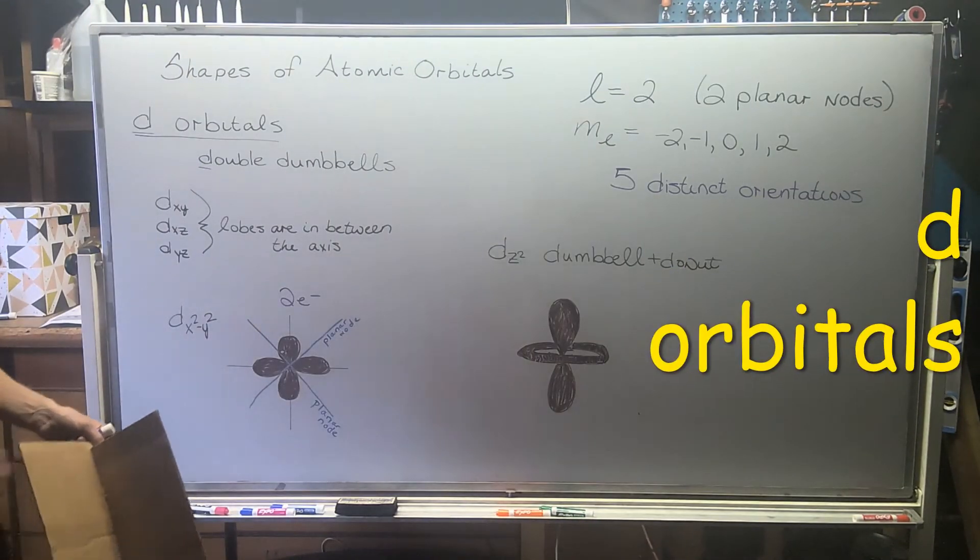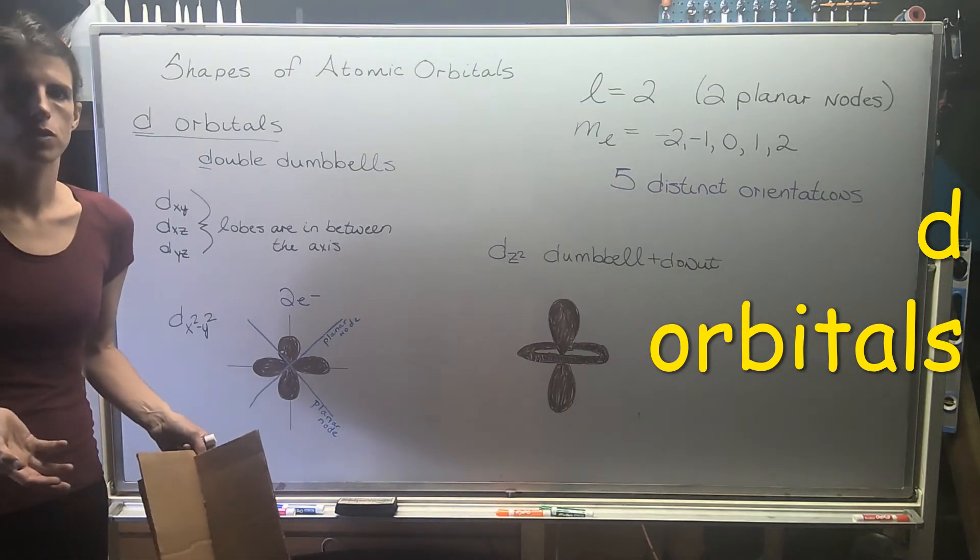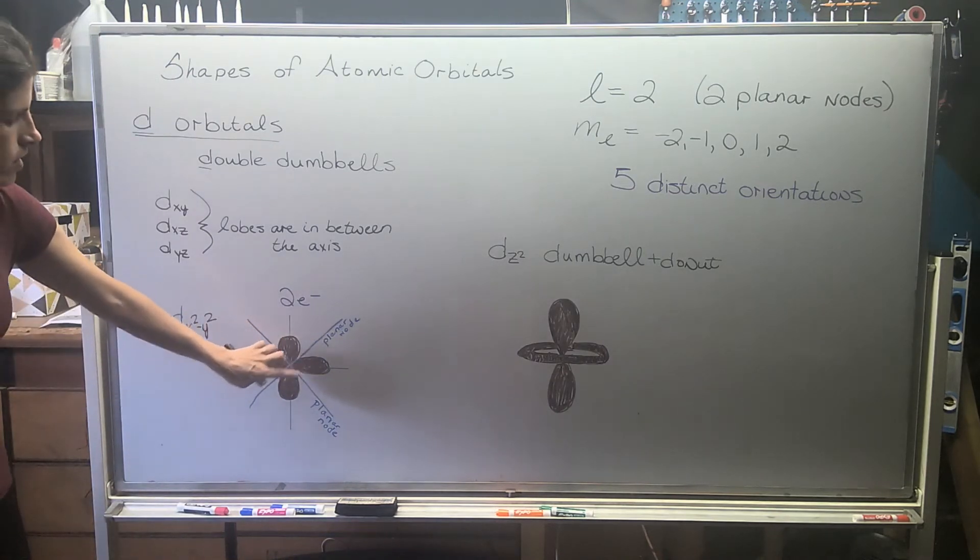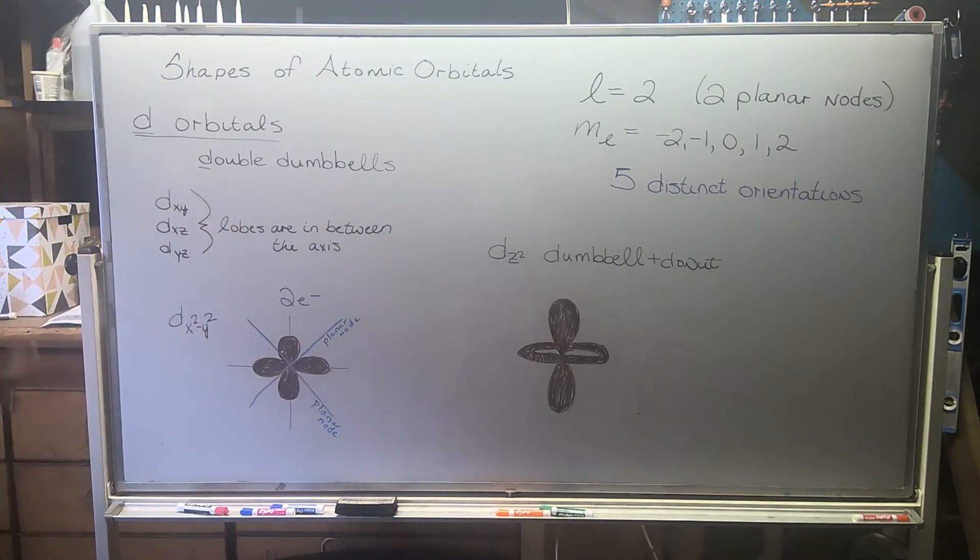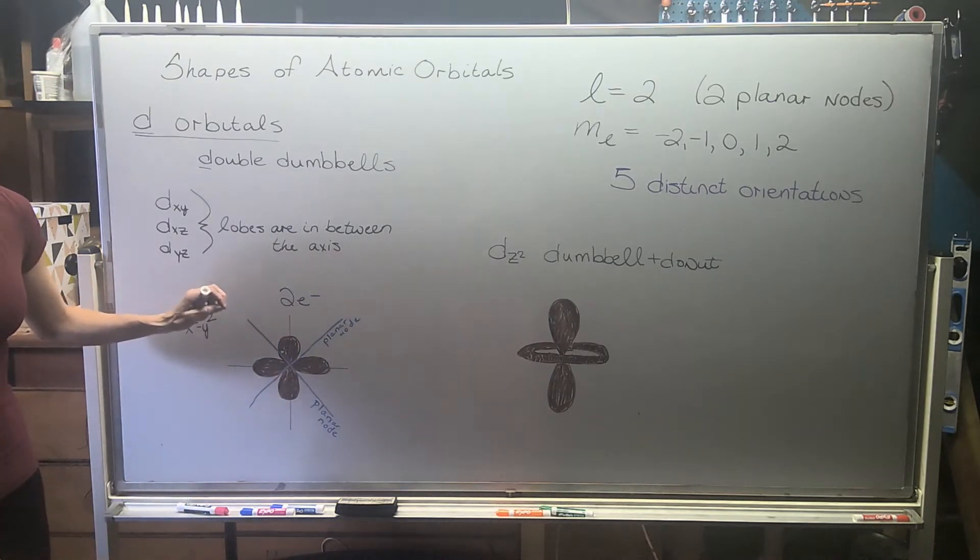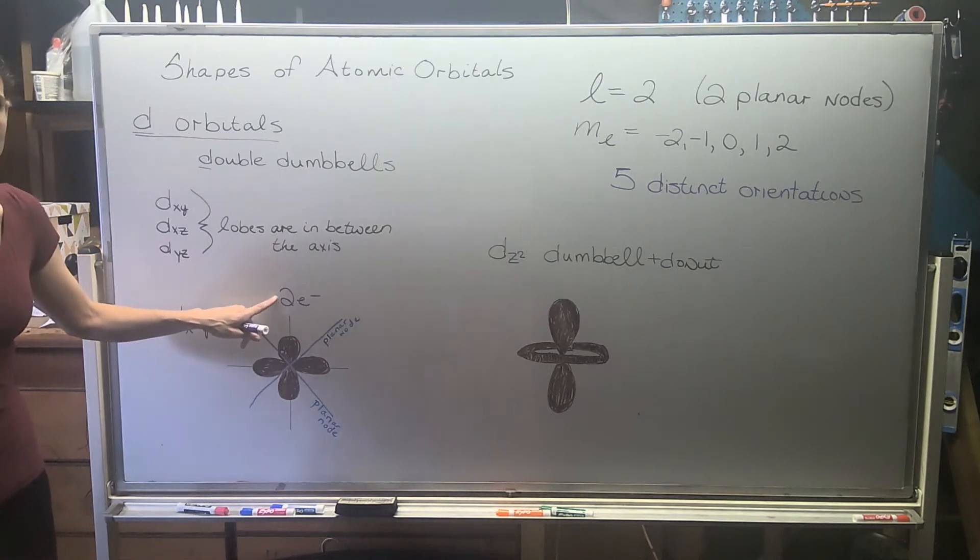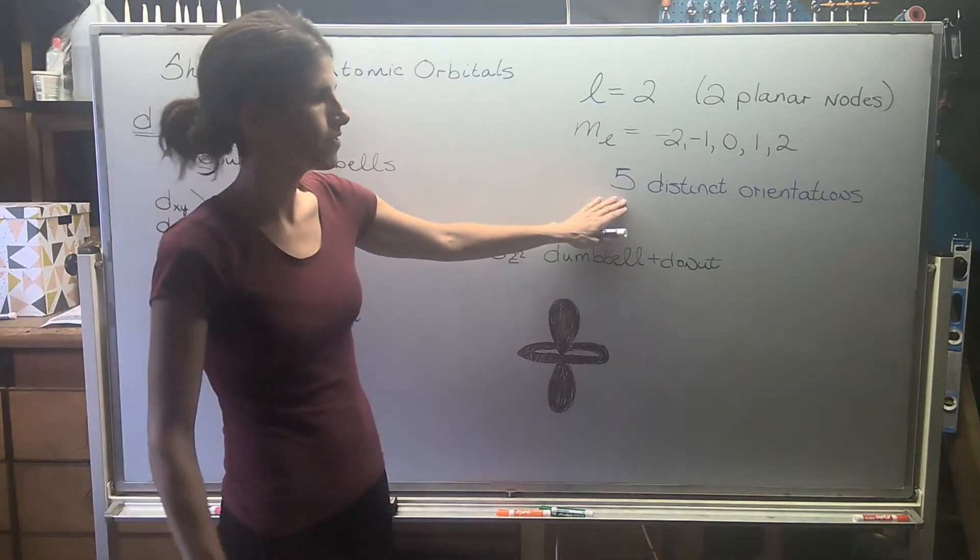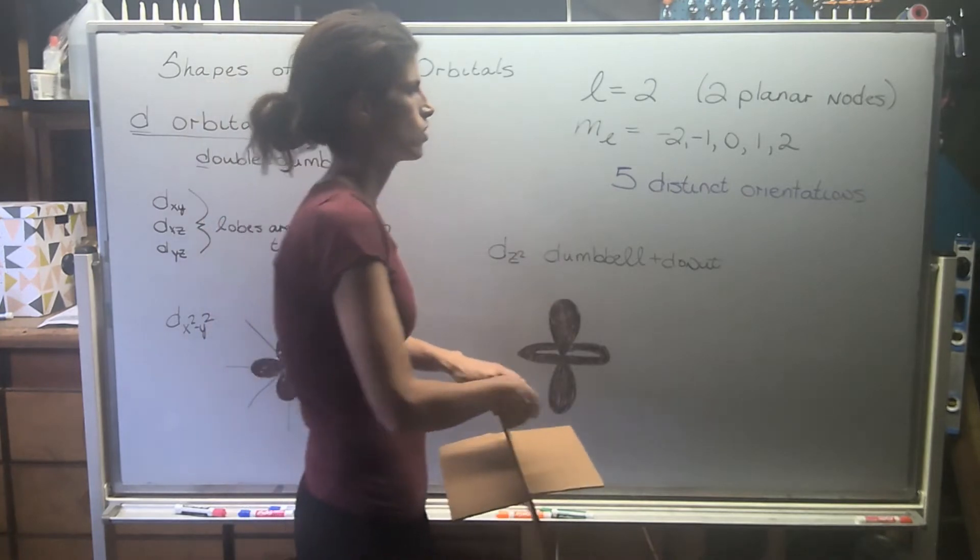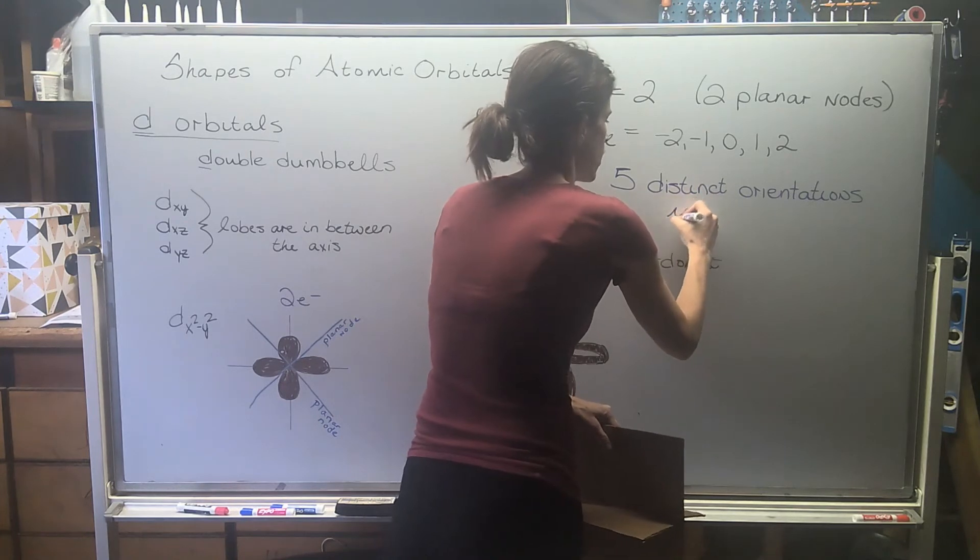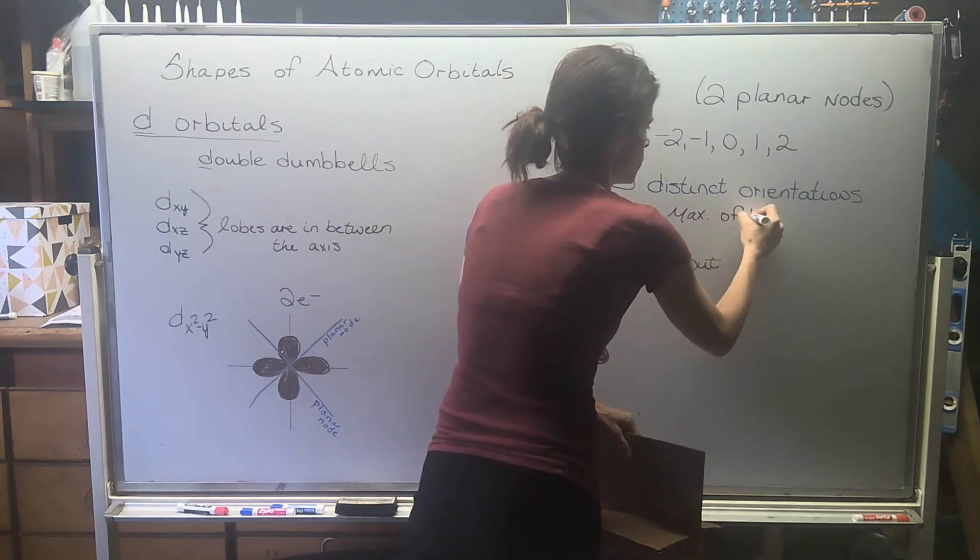p orbitals are dumbbells. For me, the d orbitals are double dumbbells. Because they have four distinct lobes. Even though they have four lobes, keep in mind that each one of these orientations, each one of these orbitals, only can hold two electrons. We have five distinct orientations, so all together, our d subshell holds a max of 10 electrons.